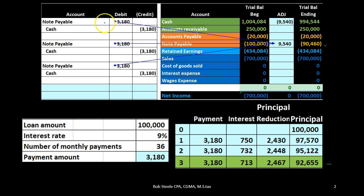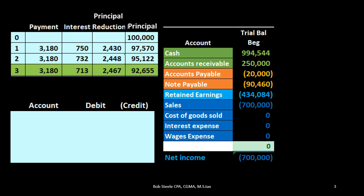These payments should have cash going out of $3,180 each time. For the first payment, notes payable is $2,430 and interest is $750. The second payment has interest of $732 and notes payable of $2,448. At the end of the time period, once we have the amortization schedule and three payments have been made, all we do before making the financial statements is make the notes payable balance match the amortization table and record the interest — which will be the difference.